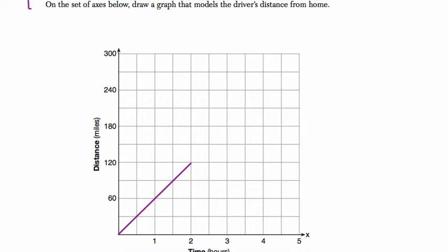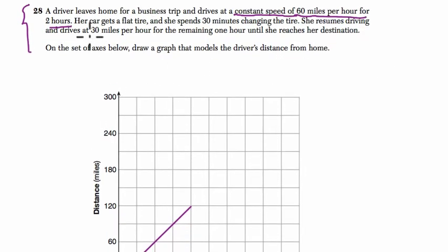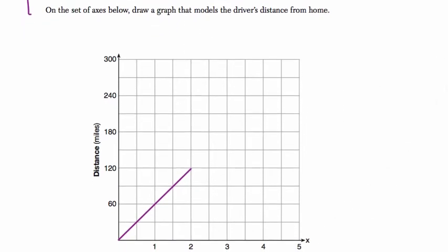Next, what happens? Her car gets a flat tire and she spends 30 minutes changing the tire. So 30 minutes, it's a half of an hour. I'm going to change colors here. For the next 30 minutes, her distance is not going to decrease. She's not going to go anywhere, right? So we have a flat line.